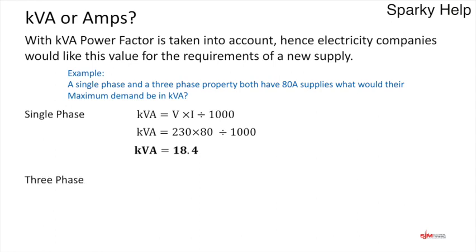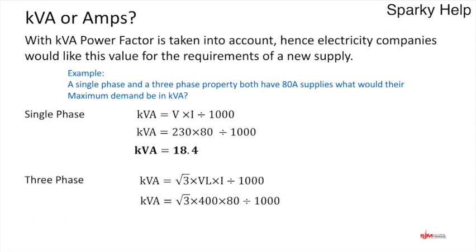For a three-phase installation, the formula is: KVA = √3 × VL × I ÷ 1000. Root three is 1.732, VL is the line voltage of 400 volts, times the current. So: √3 × 400 × 80 ÷ 1000 = 55.425 KVA. So for single-phase or three-phase, those would be the maximum KVA values for an 80 amp supply.